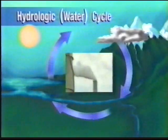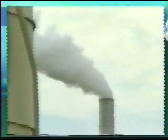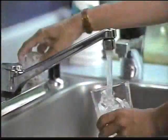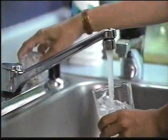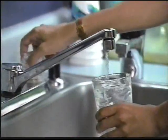Many pollutants, both man-made and naturally occurring, circulate with the water cycle. They create problems such as acid rain and hard water, and these impact the quality of the water that's available for us to use.